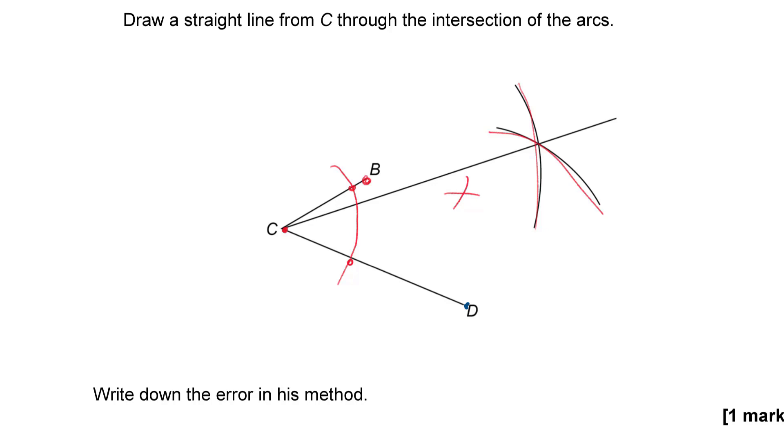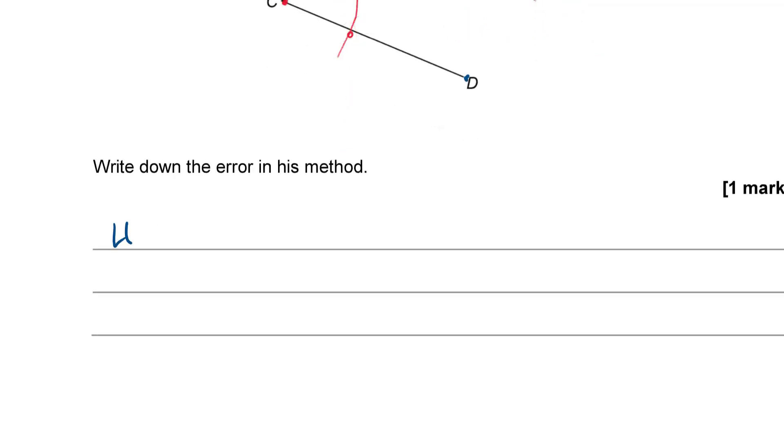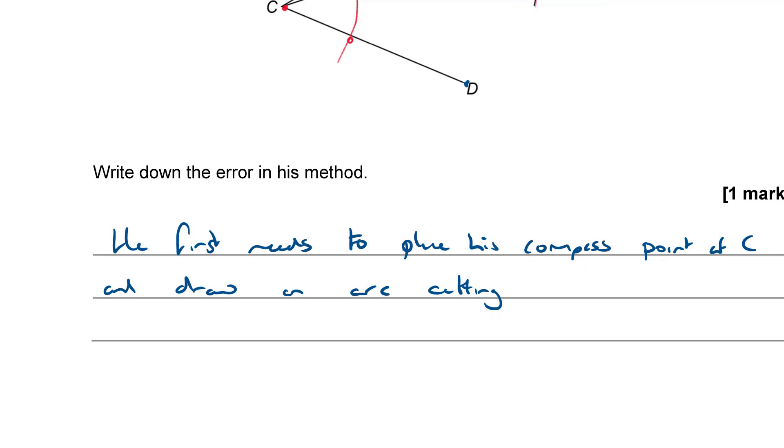What you're meant to do is you're first meant to put the compass at C and draw an arc that crosses both lines and then use those two points to then go on to do your two arcs. So, that's where he went wrong. So, he first needs to place his compass point at C and draw an arc cutting BC and DC.